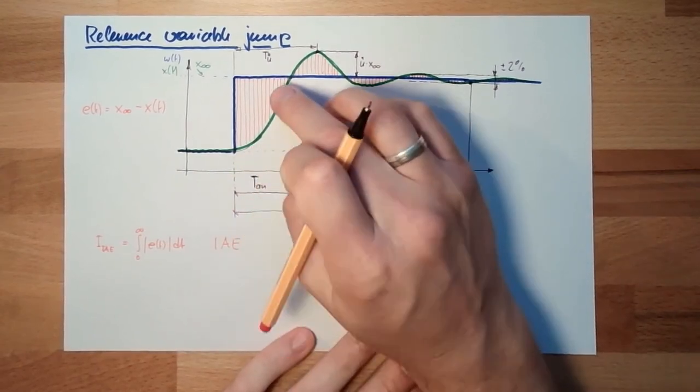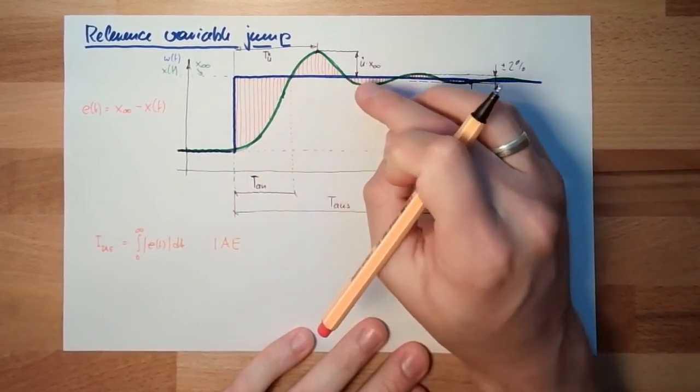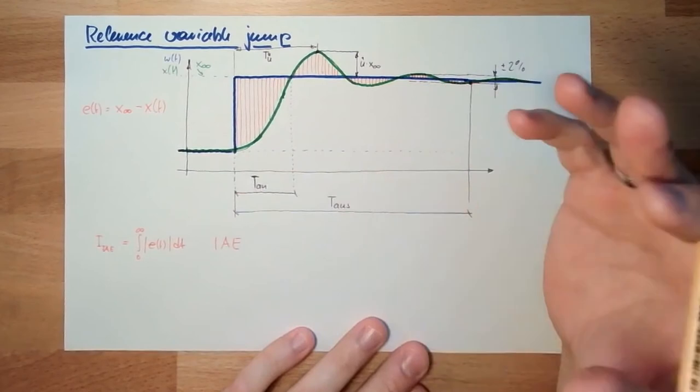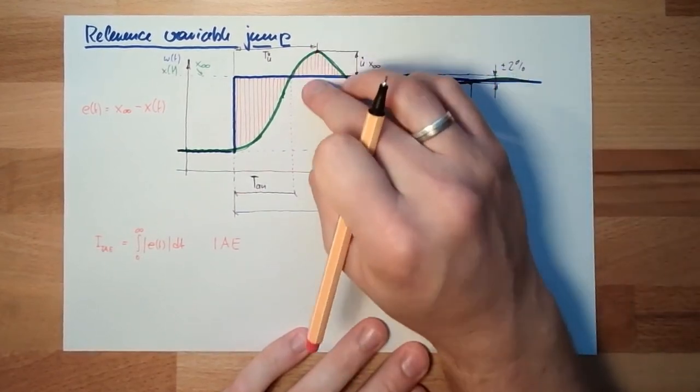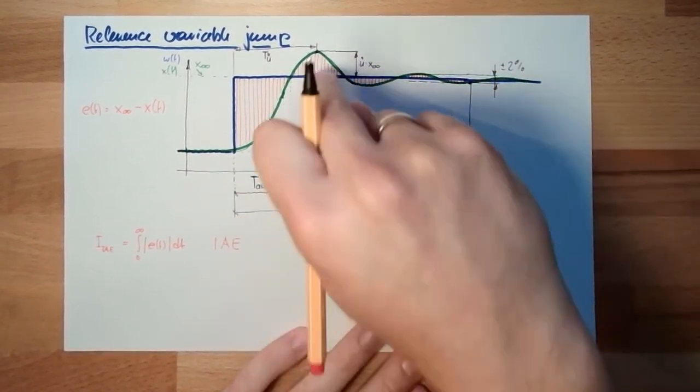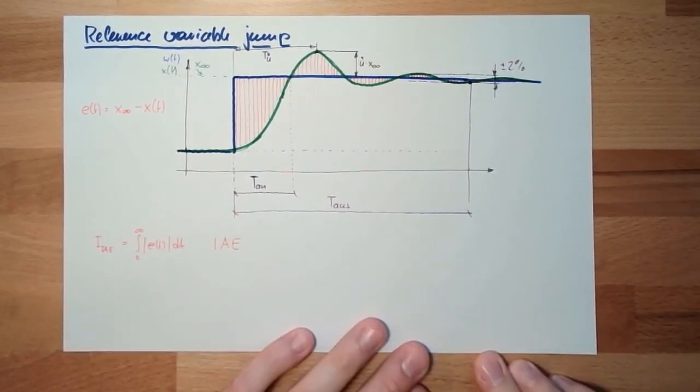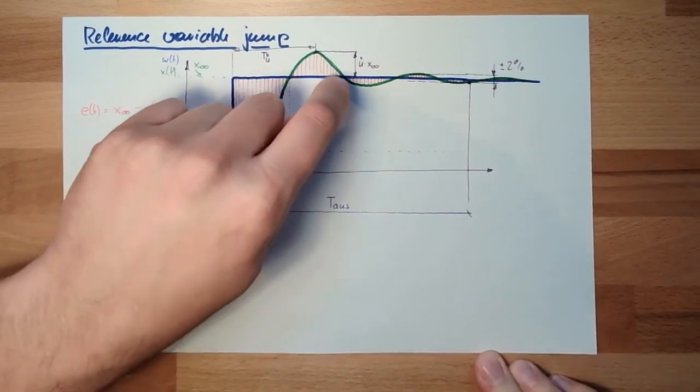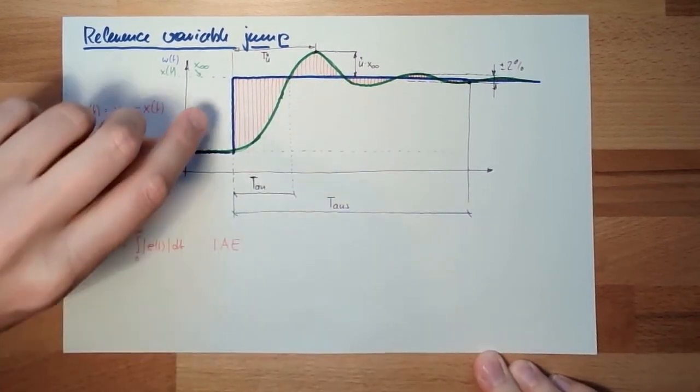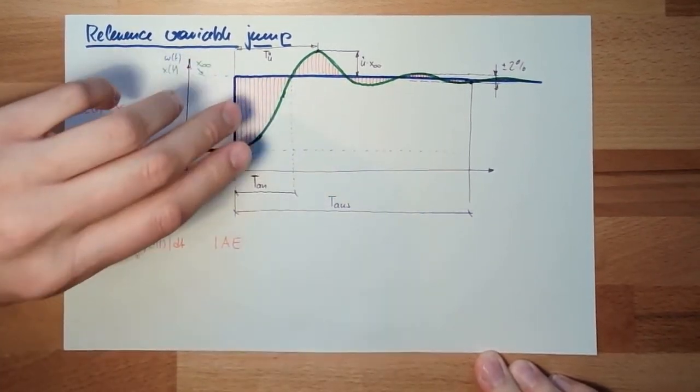You could say, hey, small errors I don't think are not that critical, but large errors must get into quite critical. So it's not enough to use the absolute value, then we can square it.